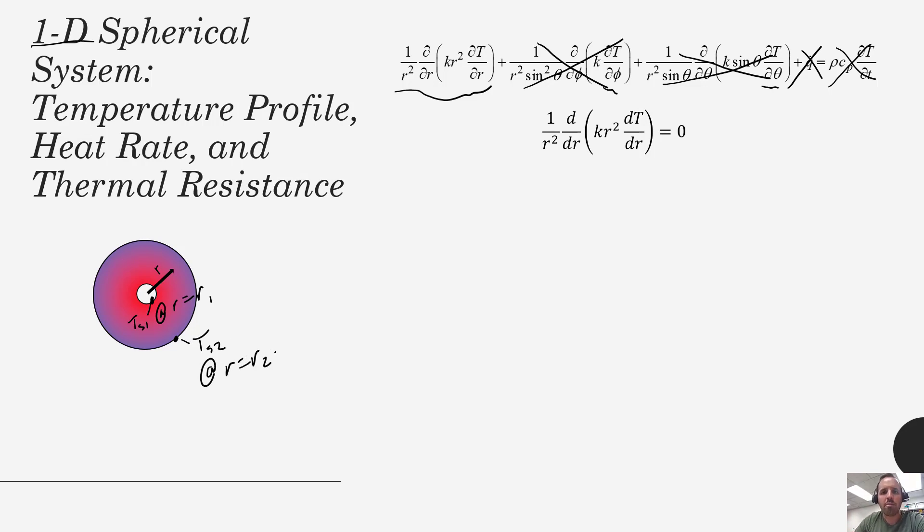I'm gonna skip a lot of that math, I think you guys are getting the gist of how to do this, and we end up with this temperature profile. So again this is a nonlinear temperature profile, but our temperature does vary as a function of r, the radius. This equation would be defined specifically for r between r1 and r2.